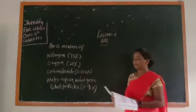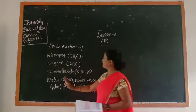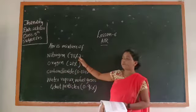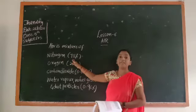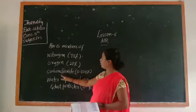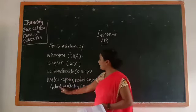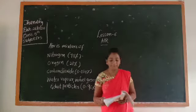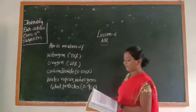Here is a big picture of air composition. We can see nitrogen, oxygen, carbon dioxide, water vapor, and dust particles. Nitrogen makes up 78% of air, oxygen is 21%, carbon dioxide is 0.04%, and other gases and dust particles make up 0.96%.